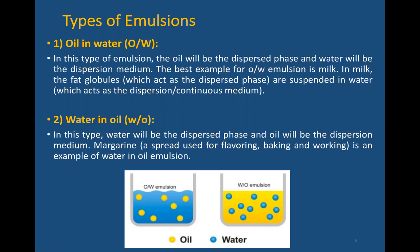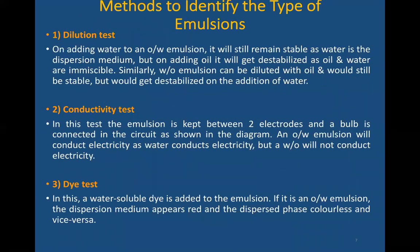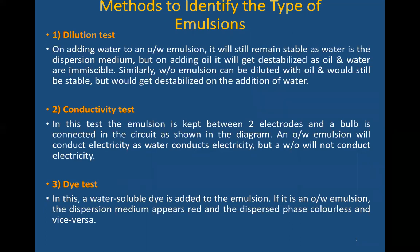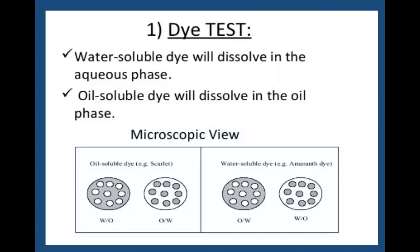How to identify the type of emulsion: suppose an emulsion is prepared and you are given a sample and asked to identify it. There are different types of tests: the dilution test, conductivity test, dye test, fluorescence test, and cobalt chloride test. We will discuss all these tests thoroughly, as these tests are also important for when you have some sort of emulsion to identify.